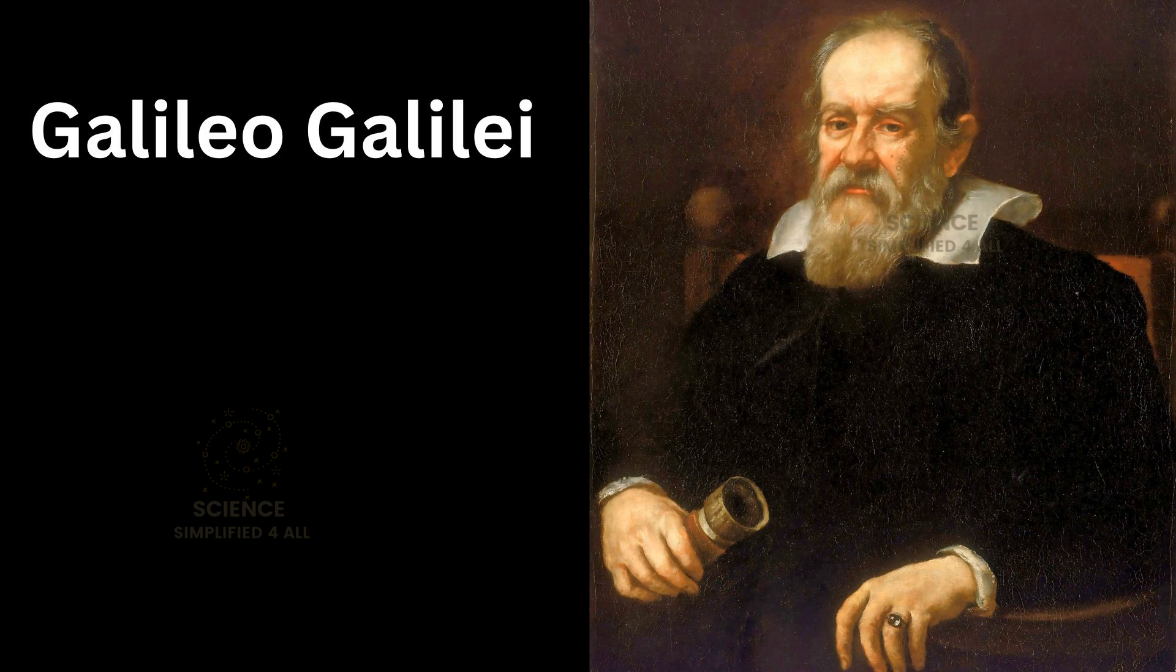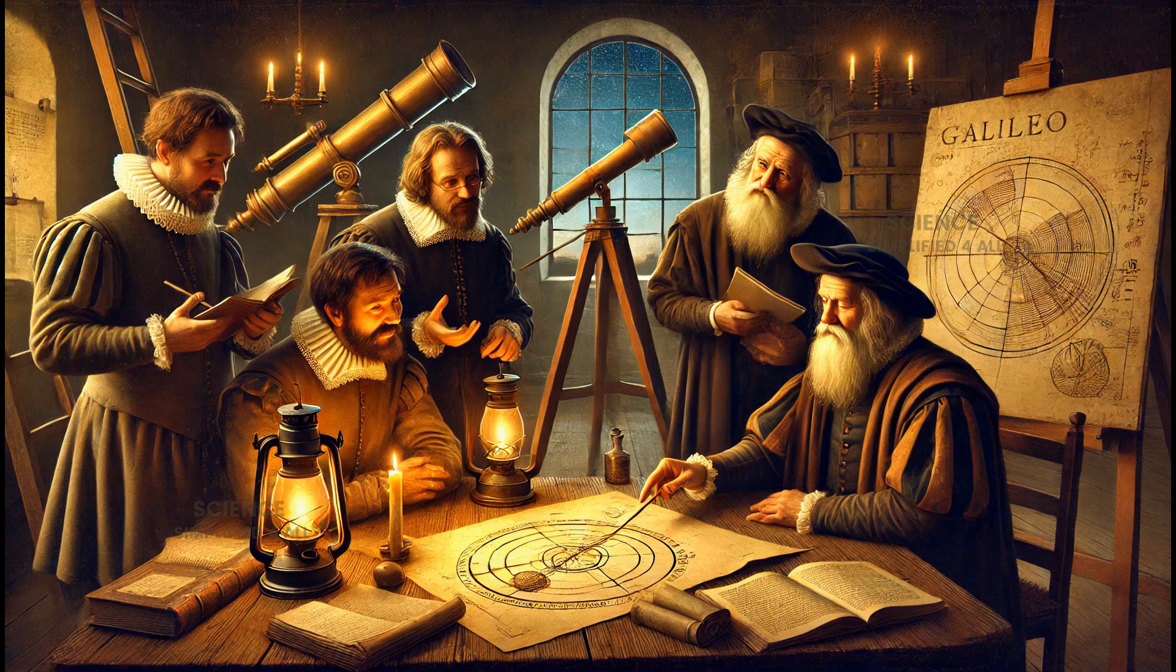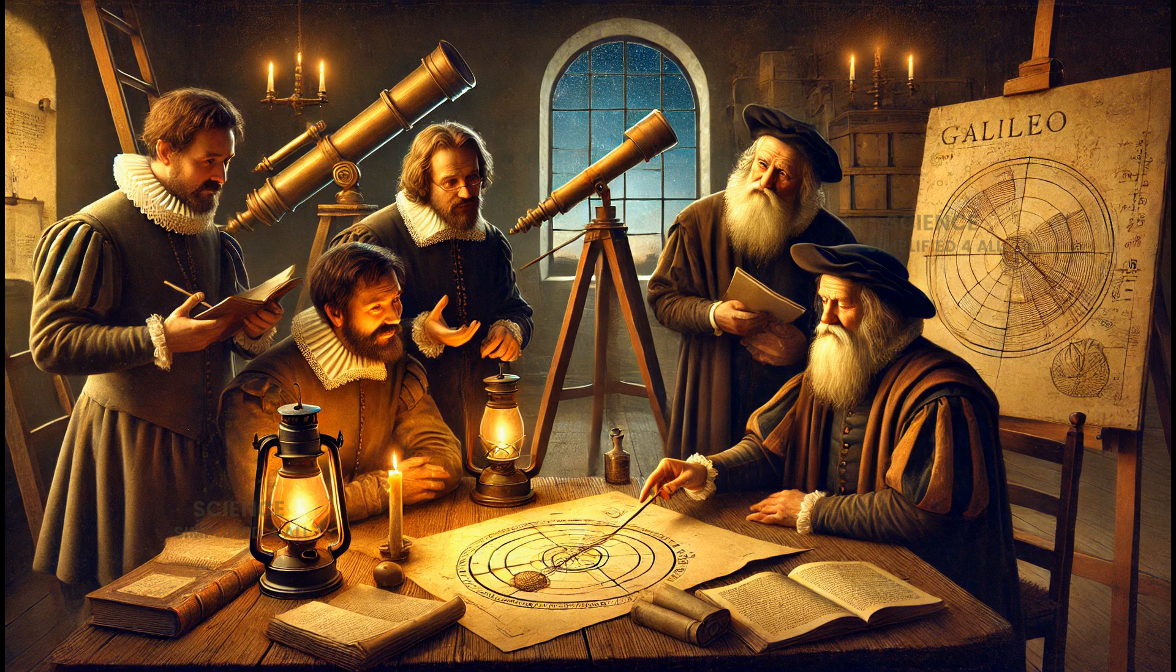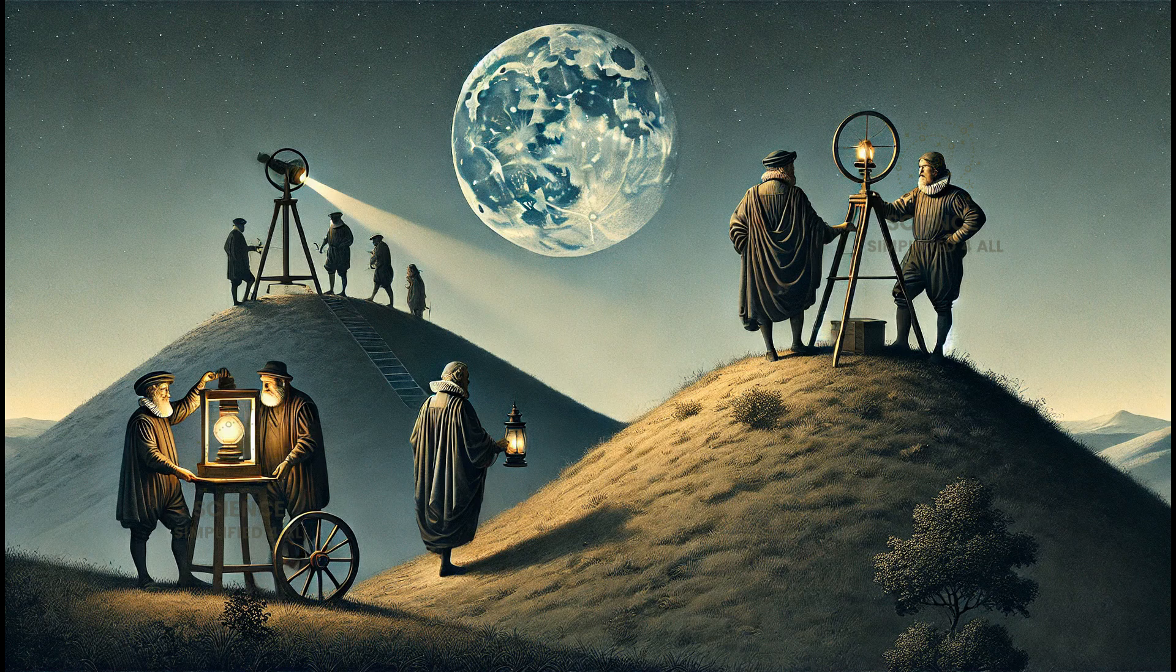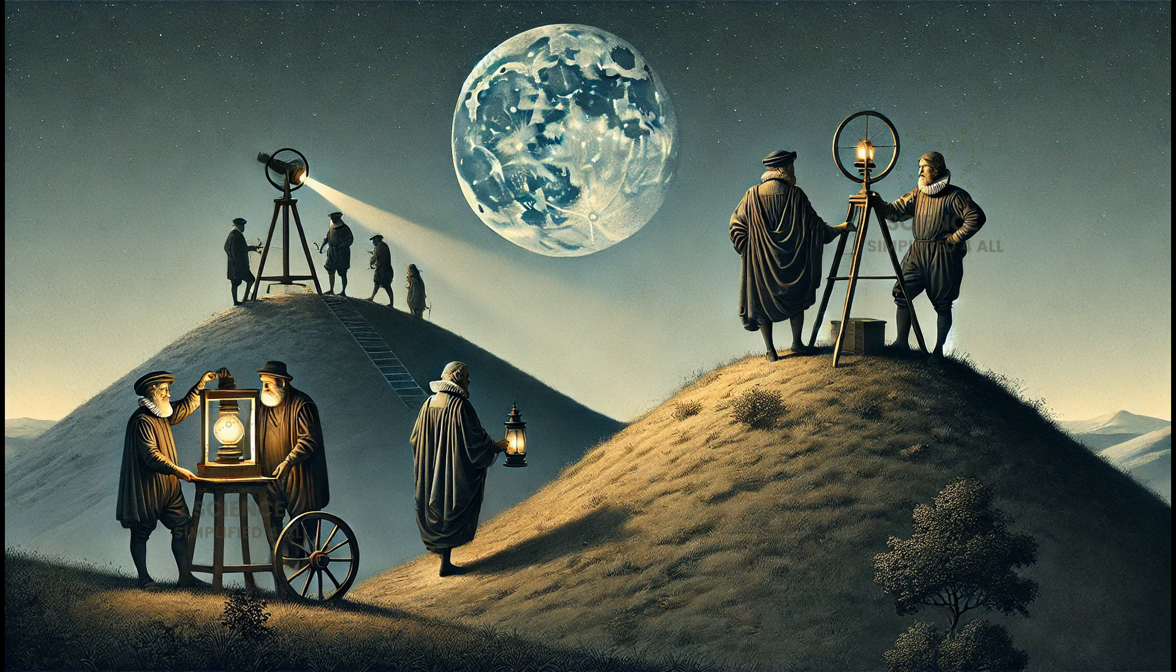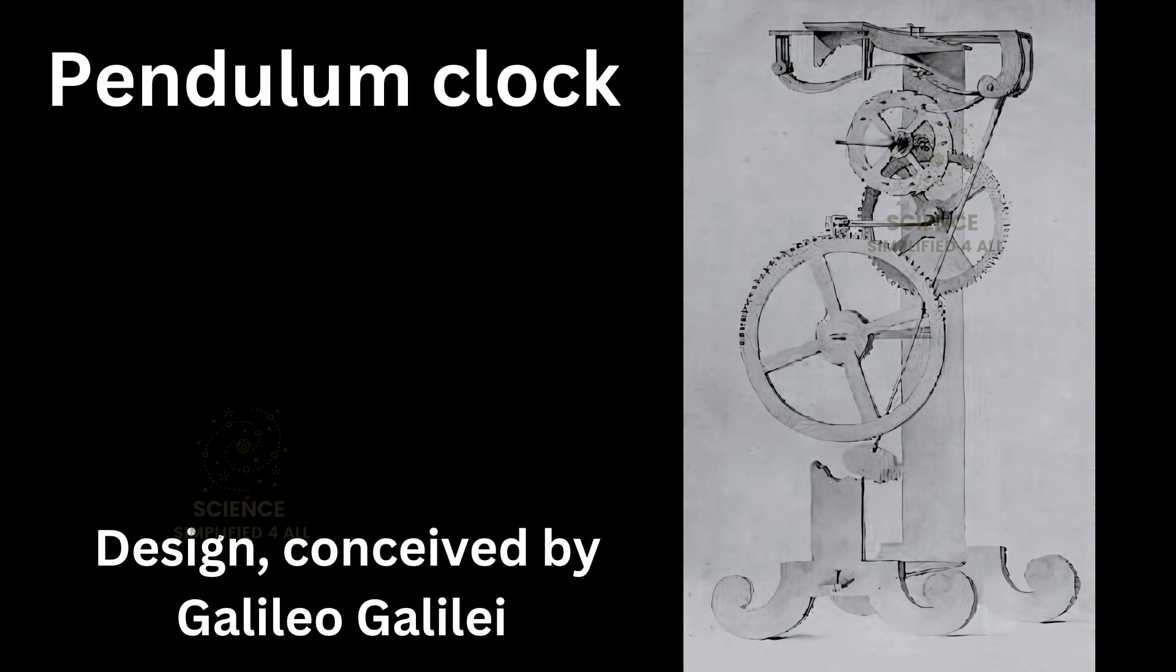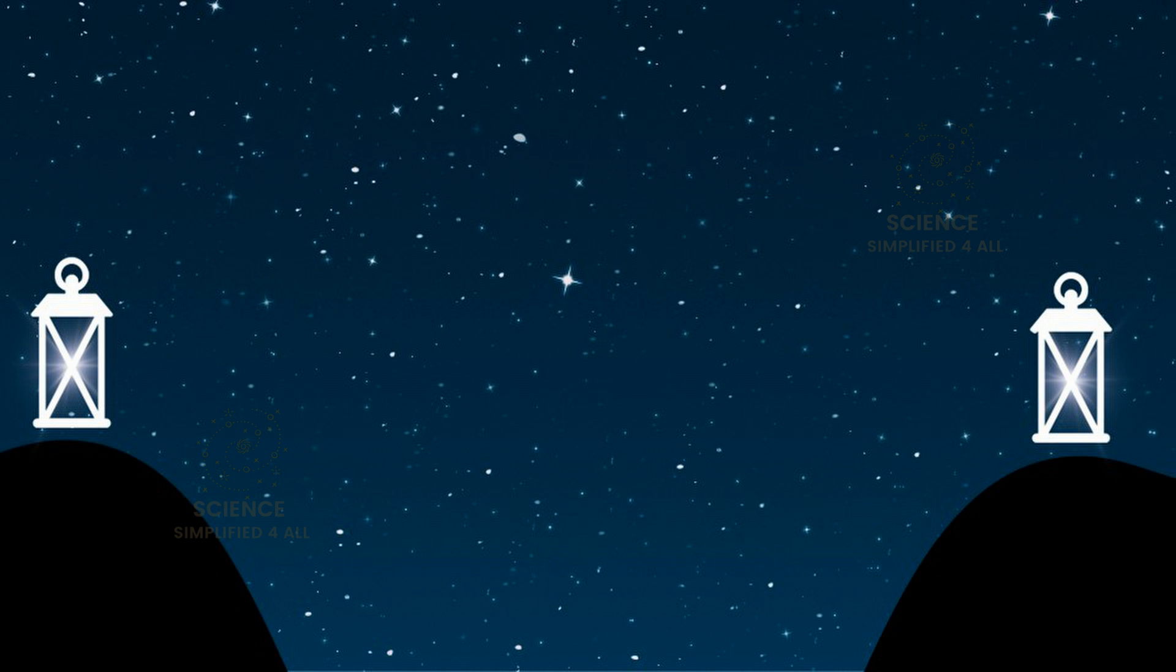However, the great scientist and thinker Galileo refused to accept this idea. He proposed that light might have a finite speed and set out to measure it. This marked one of the earliest recorded attempts to determine the speed of light. Galileo and his team devised a clever experiment. They split into two groups and positioned themselves on the tops of two nearby hills, each equipped with a lantern that had a shutter to cover the light when needed. They also carried pendulum-based instruments to measure time.